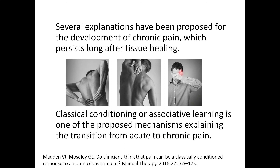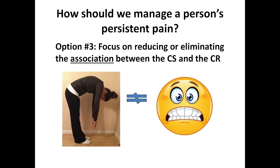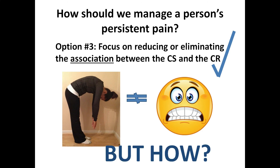Classical conditioning, or associative learning, is one of the proposed mechanisms explaining the transition from acute to chronic pain — the case of chronic pain that persists long after tissue healing. Classical conditioning can modulate judgments about whether an event is painful or not. Option three: focus on reducing or eliminating the association between the CS and the CR, which is what is recommended in this presentation.